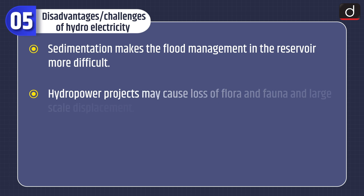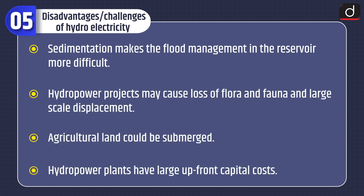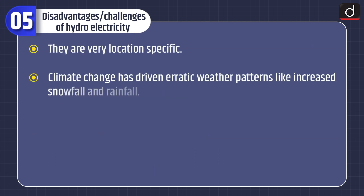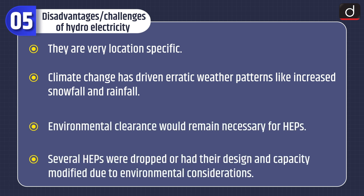Disadvantages or challenges of hydroelectricity: sedimentation makes flood management in the reservoir more difficult. Hydropower projects may cause loss of flora and fauna and large-scale displacement. Agricultural land could be submerged. Hydropower plants have large upfront capital costs and are very location-specific. Climate change has driven erratic weather patterns like increased snowfall and rainfall. Environmental clearance remains necessary for HEPs, and several HEPs were dropped or had their design and capacity modified due to environmental considerations.